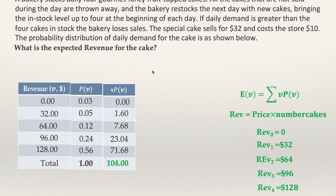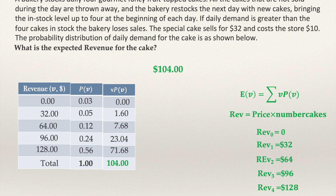Adding all the products gives $104. So the expected value, or expected revenue, or average revenue for this store every day is $104. We can type 104 dollars as the expected revenue, the mean revenue, or the average revenue. With that, I finish the explanation of how to compute the expected revenue for the cake. Thank you.